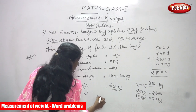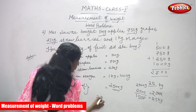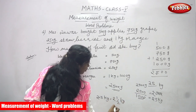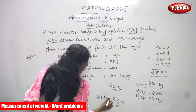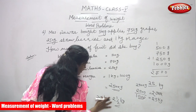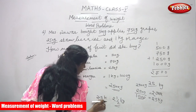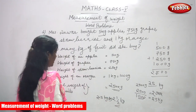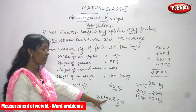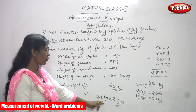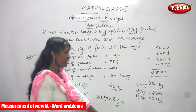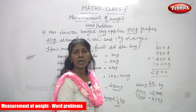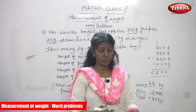So the total weight of fruits is 2.5 kilograms, or two and a half kilograms. You got the answer in grams first, then converted into kilograms. The final answer is 2.5 kilograms or two and a half kilograms.